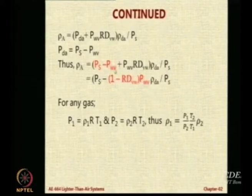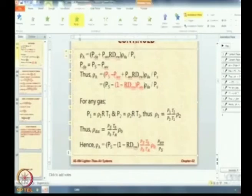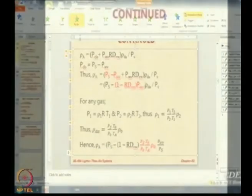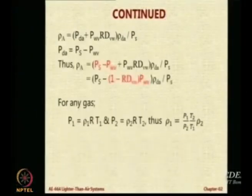P_S minus, I take P_W common, 1 minus RD. We need one more bracket. We need another bracket here. There you go.